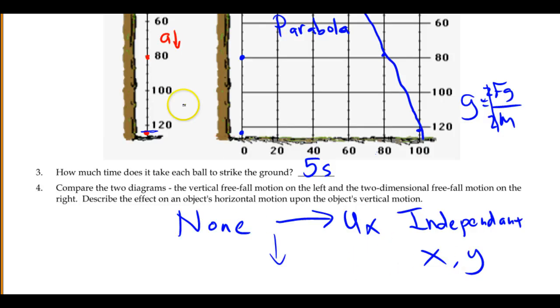So the independent axes will make this a much easier concept to handle. That's the initial idea behind horizontal projectiles. Essentially, they're just things falling or in freefall with some forward motion to it.